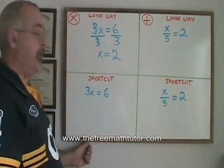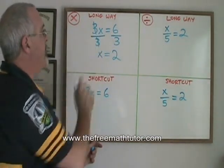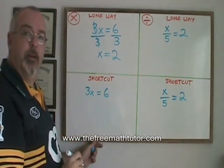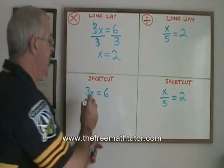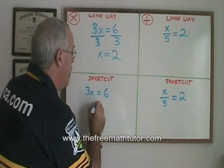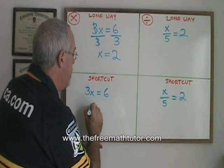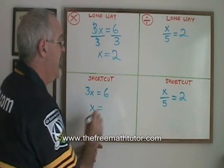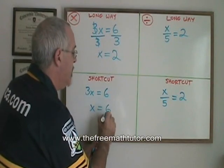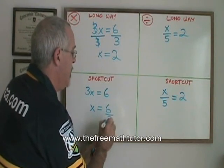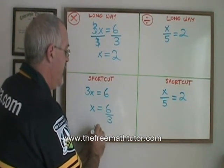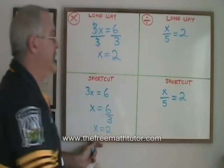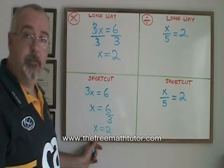With the shortcut, I don't bother showing that I'm dividing the left side by 3. I'm still dividing both sides by 3, but all I do is write my x isolated, and I show that I am dividing the other side — 6 by 3. I get x equals 2, which is the same answer and the correct answer.